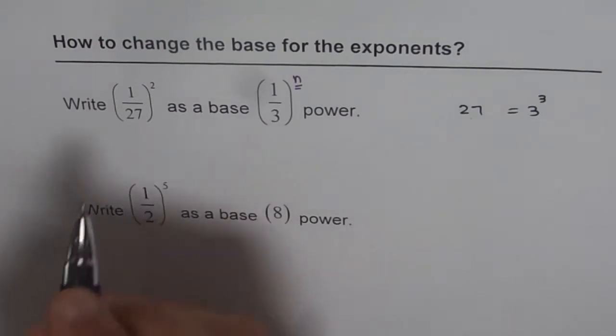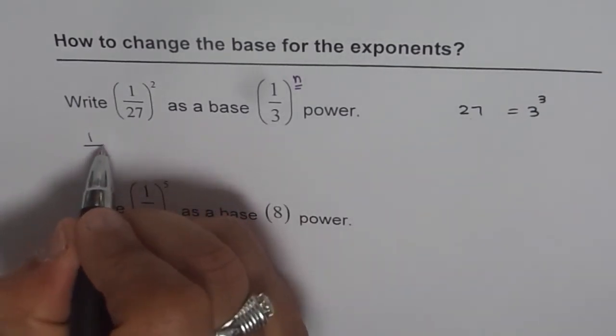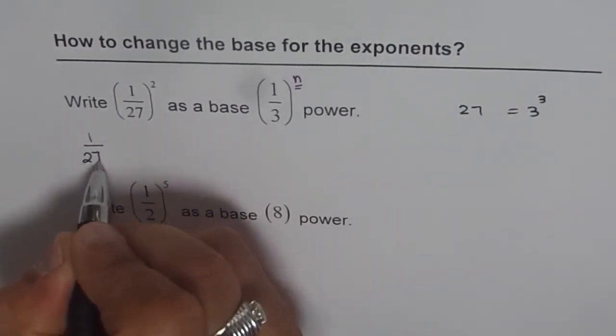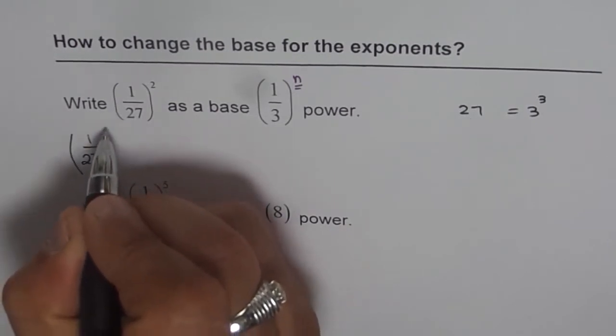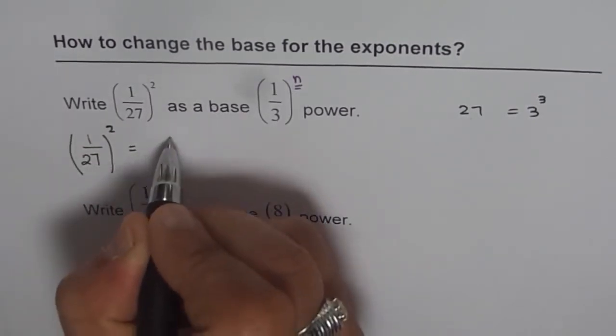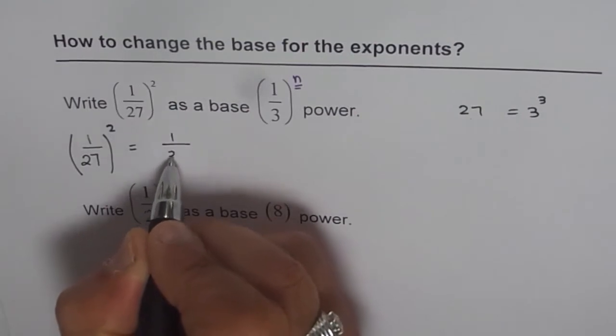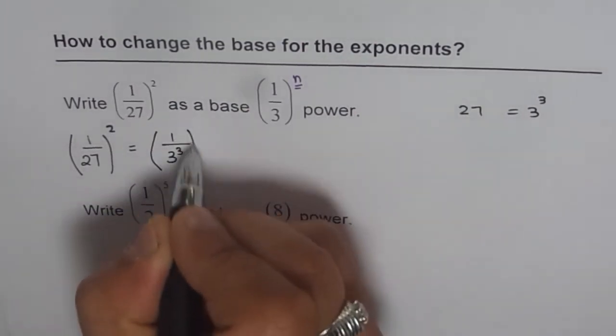So in this expression I can write 27 as 3 cube. Then what do I get? So I have 27, 1 over 27 square. Now I can write this as 1 over 3 cube to the power of 2.